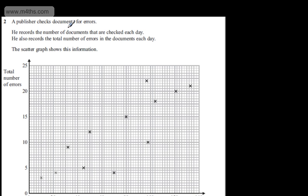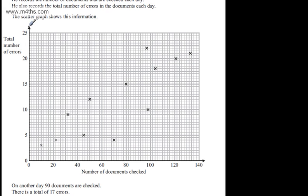This is question number two. It says a publisher checks documents for errors. He records the number of documents that are checked each day. He also records the total number of errors in the documents each day. The scattergraph shows this information.